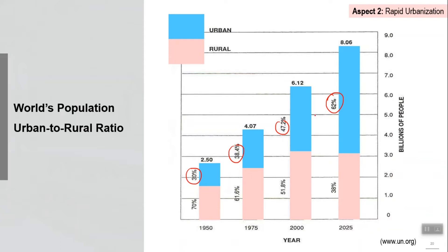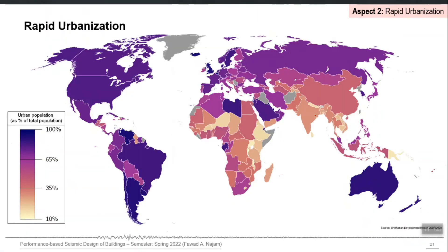Similar statistics also tell the same story. Here in this map, you can see the urban population as a percentage of total population. Somewhere in Pakistan and the whole south and southeast Asia, it is in the range of maybe 30 to 40 percent, and this number is going to go up in the next few years.